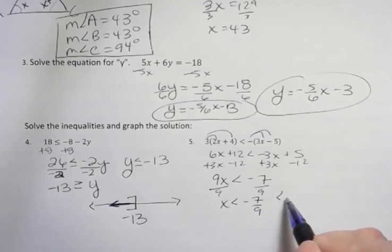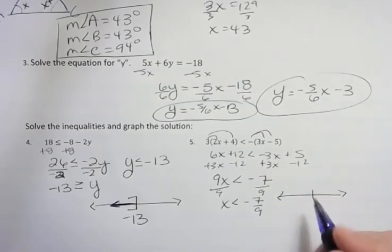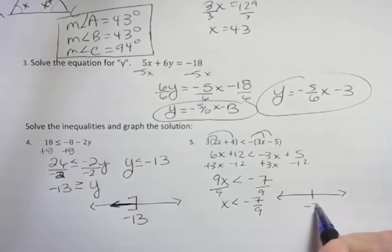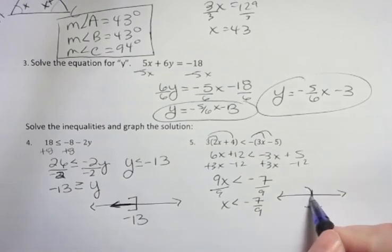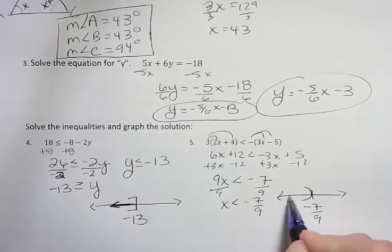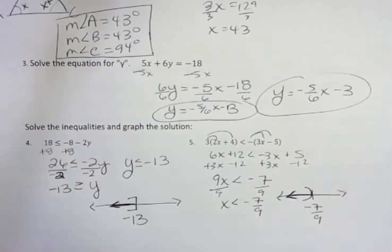Then my graph on this one would look like negative 7 ninths is the number I'm starting at. See how I don't have an equal to part. That's going to be rounded. It's less than, so it's going to shade to the left. If that was greater than, it would shade to the right. Okay. Have a fantastic day. We'll see you next time.